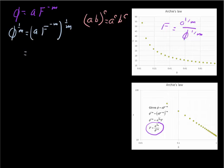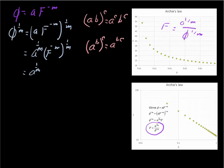So over here this is going to be a to the 1 over m, times F to the minus m to the 1 over m. And remind yourself of that other rule: if we have a to the b, raised to the c power, this is just equal to a to the b times c. Applying that rule, we have a to the 1 over m, times F to the minus m times 1 over m — the m's cancel — we just end up with a to the 1 over m times F to the minus 1, equal to phi to the 1 over m.